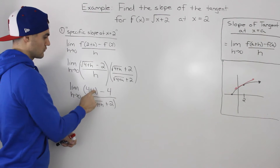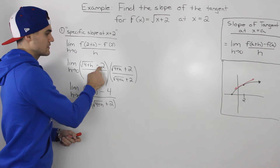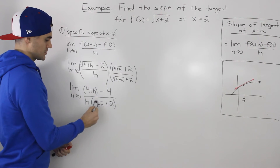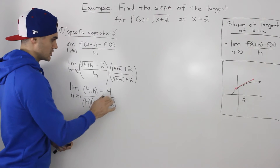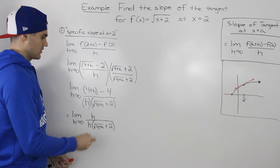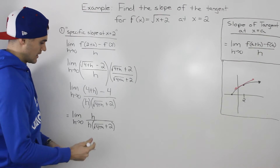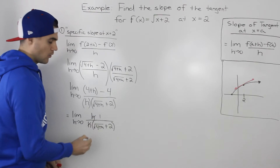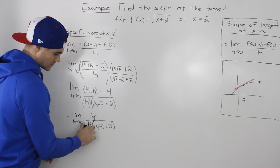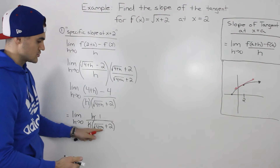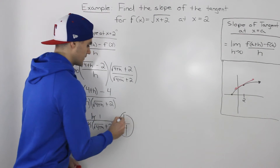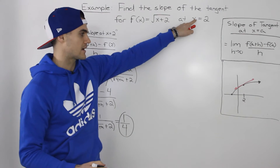When multiplying an expression by its conjugate, you just multiply the end terms. So the square root of 4 plus h times itself is just 4 plus h — the square root goes away. Then negative 2 times positive 2 is negative 4. The h and the square root of 4 plus h plus 2 stay separate in the denominator. Simplifying the numerator, the 4s cancel and we're left with just h over h times that expression, leaving a 1 in the numerator. Now we can plug in 0 for h: the square root of 4 is 2, and 2 plus 2 is 4, so our final answer is 1 over 4 — the slope of the tangent at x equals 2.